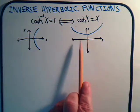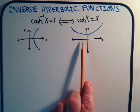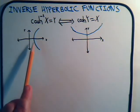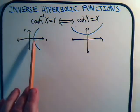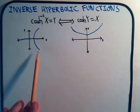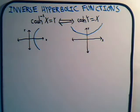This is the graph of the hyperbolic cosine function, and over here is the inverse hyperbolic cosine function. Notice that for the inverse function, x is always positive.